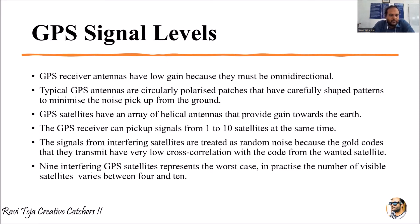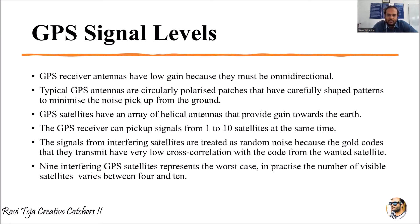GPS receiver antennas have low gain because they must be omnidirectional, meaning the signal needs to be distributed in several directions. Since the technology is wireless, we expect the signal to be scattered into several directions so that a GPS receiver can receive that particular signal. These typical GPS antennas are circularly polarized.